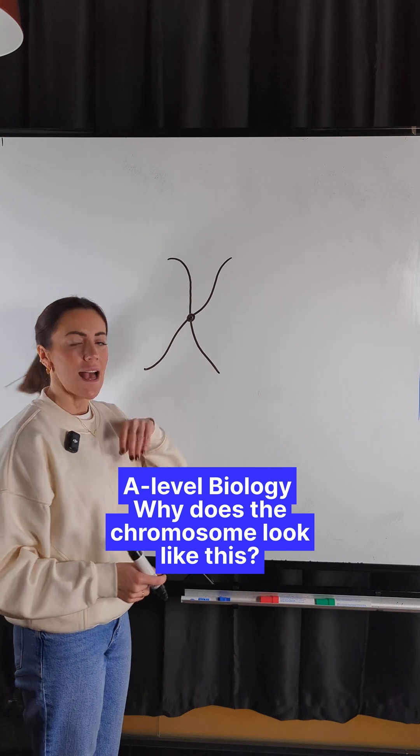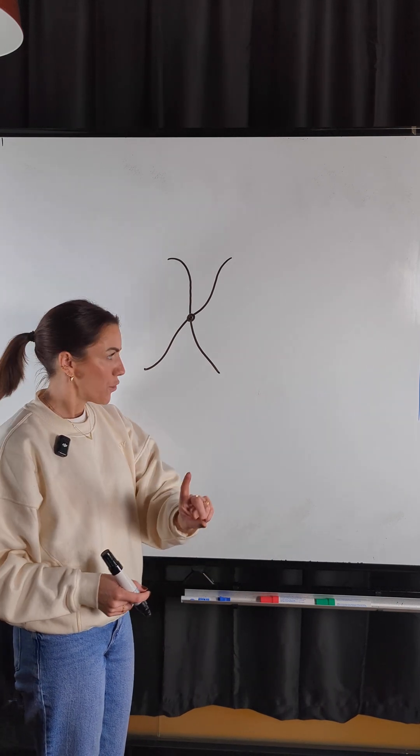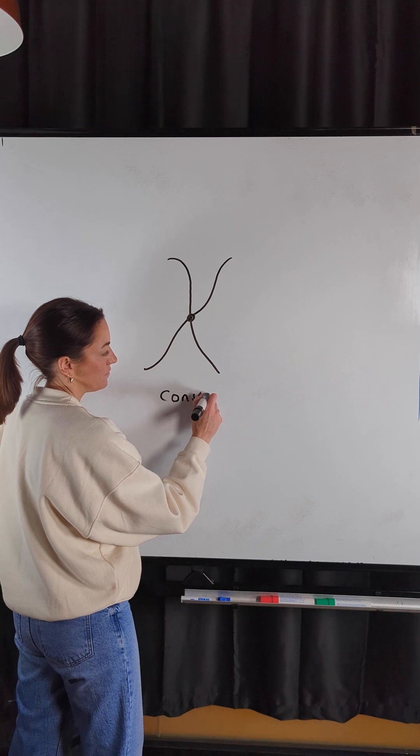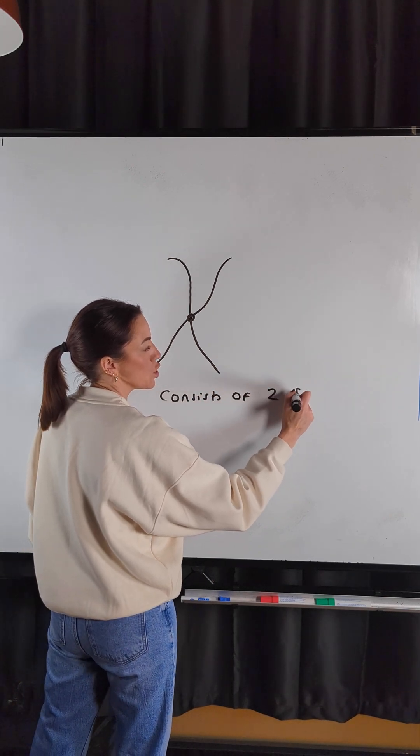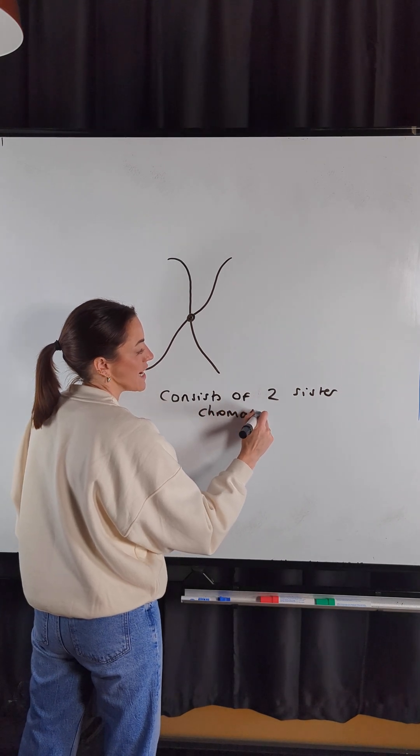This chromosome is after DNA replication, so it now consists of two sister chromatids.